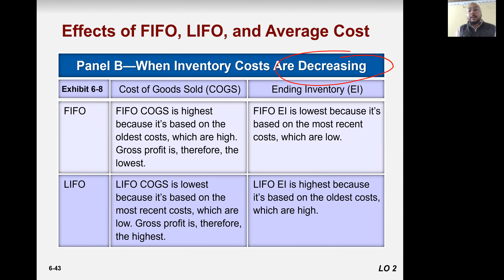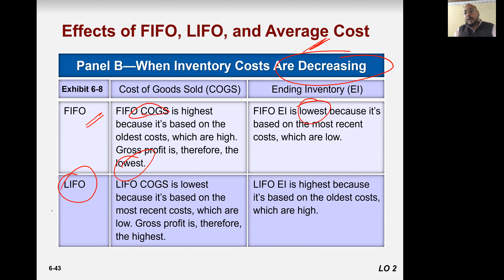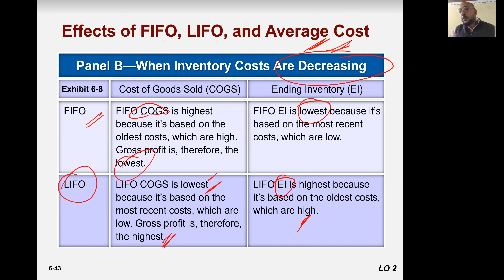So when prices are decreasing, for FIFO: cost of goods sold is higher, profit is lower, inventory is lower, and taxes are lower. And in deflation, LIFO cost of goods sold is lower, but profit is higher, ending inventory is higher, and taxes are higher. All scenarios change during a deflationary period when prices are decreasing.